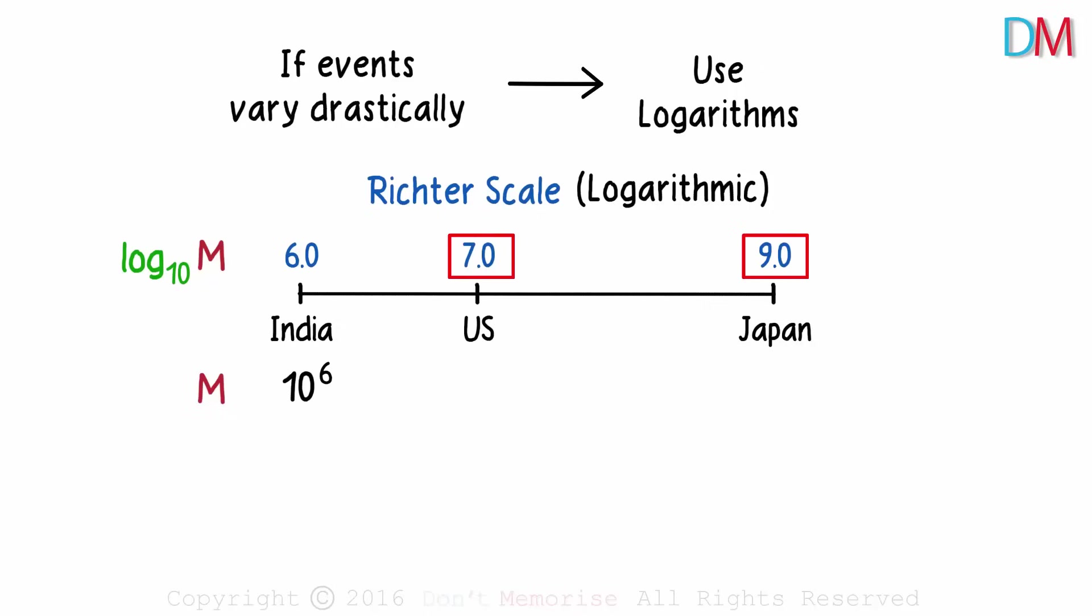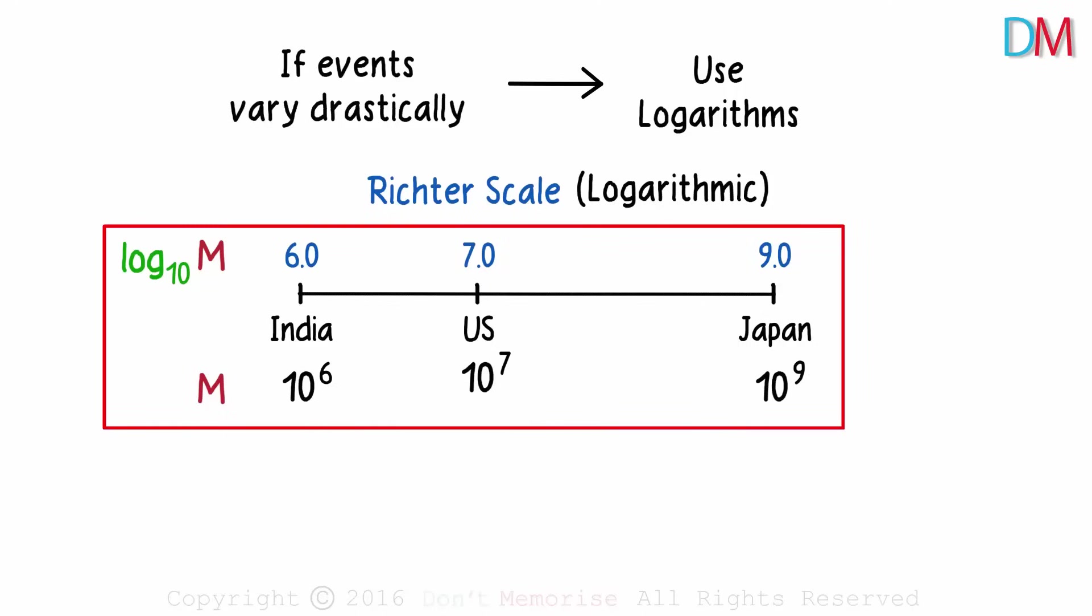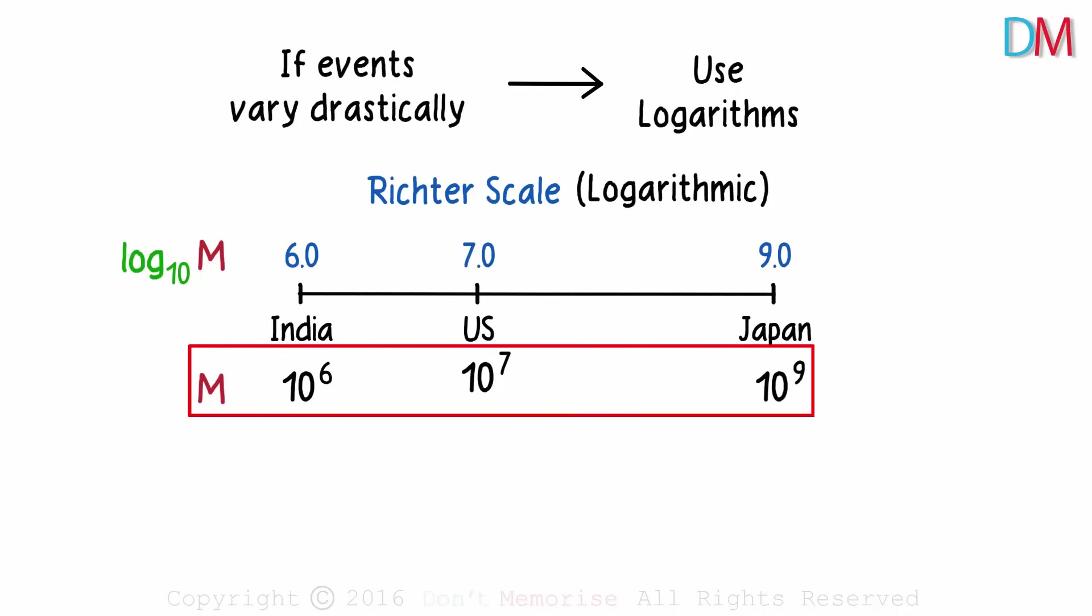And in these two cases, M will be 10 raised to 7 and 10 raised to 9. This will help us massively in understanding the Richter scale. The values of M tells us how strong the earthquakes are, while the Richter scale is used just to represent these huge numbers using a manageable scale.